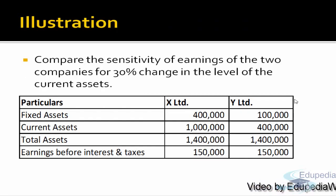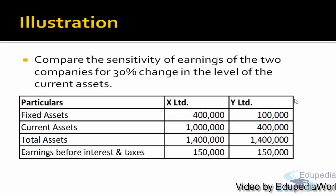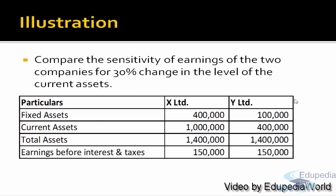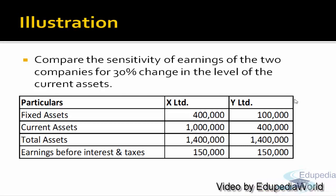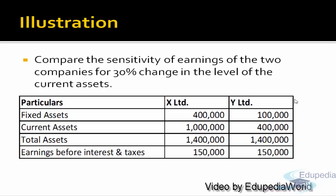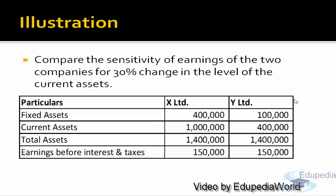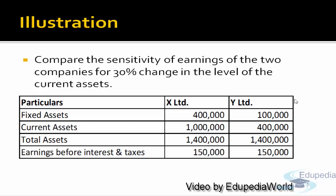If I have to compare the sensitivity of earnings of two companies for a 30% change in the level of current assets: there are two companies, X Limited and Y Limited. Both are having total assets of 14 lakh, but the current assets in X Limited is more — 10 lakh — and Y Limited is 4 lakh.